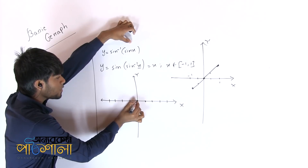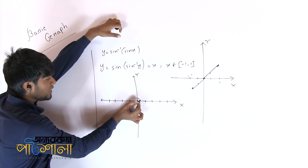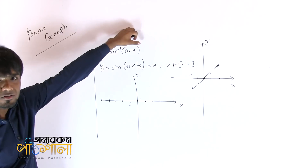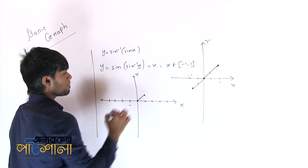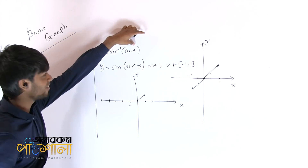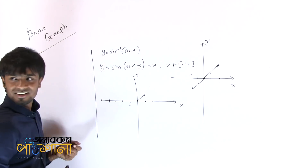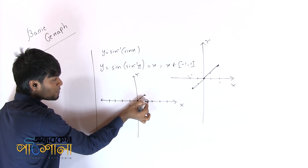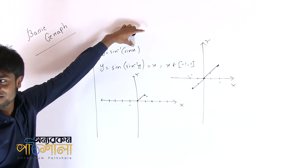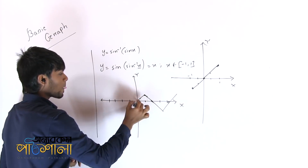sin 0 value is 0, sin inverse of 0 value is 0 — no problem. For x value 30 degrees, sin 30 gives a value, sin inverse of that gives back 30 degrees. For 90 degrees, sin 90 value is 1, sin inverse of 1 value is 90 degrees — no problem. But sin 120 degrees: the sin inverse of square root 3 by 2 gives 60 degrees, not 120 degrees. So the question is: what happens here?